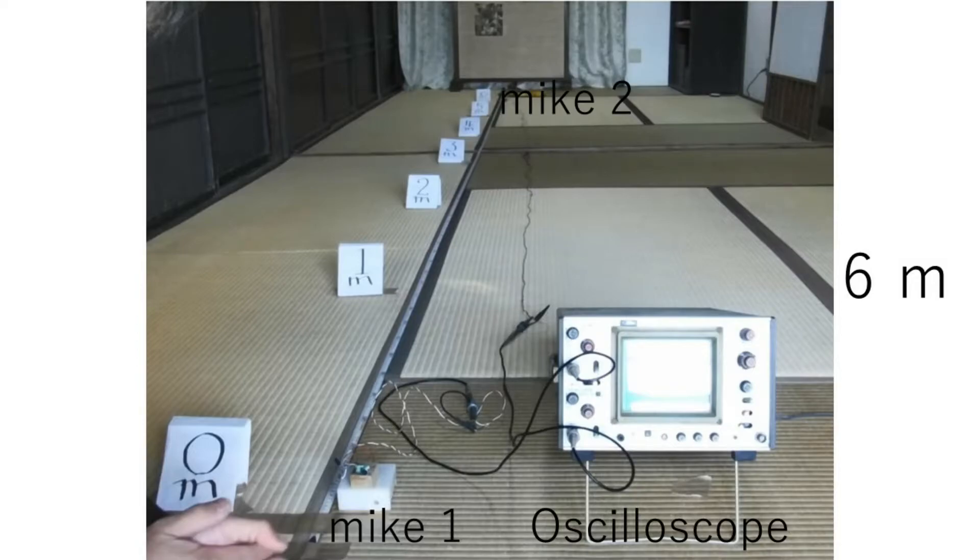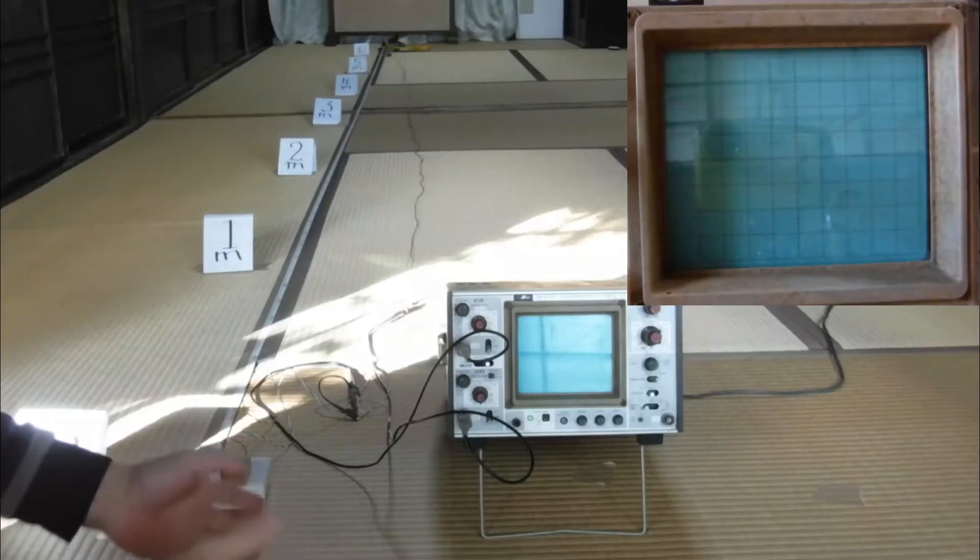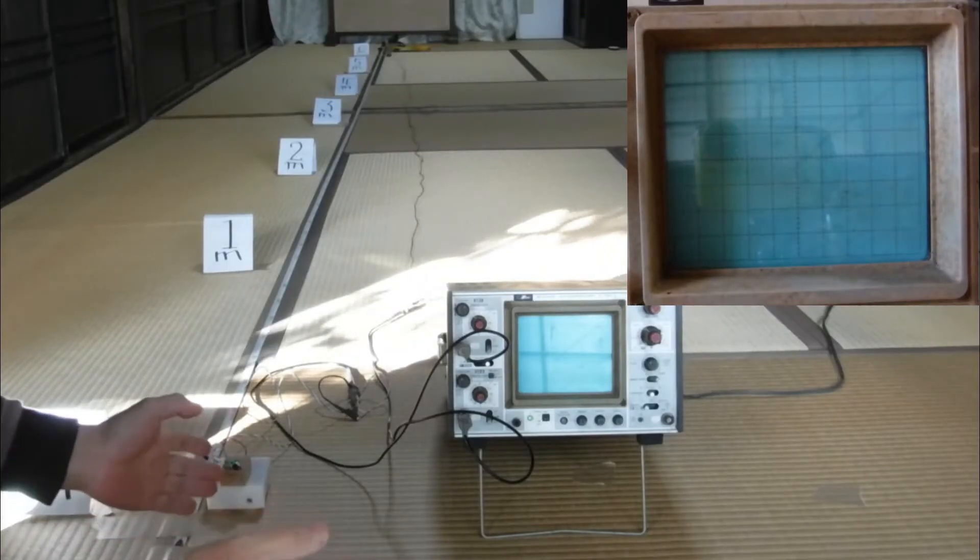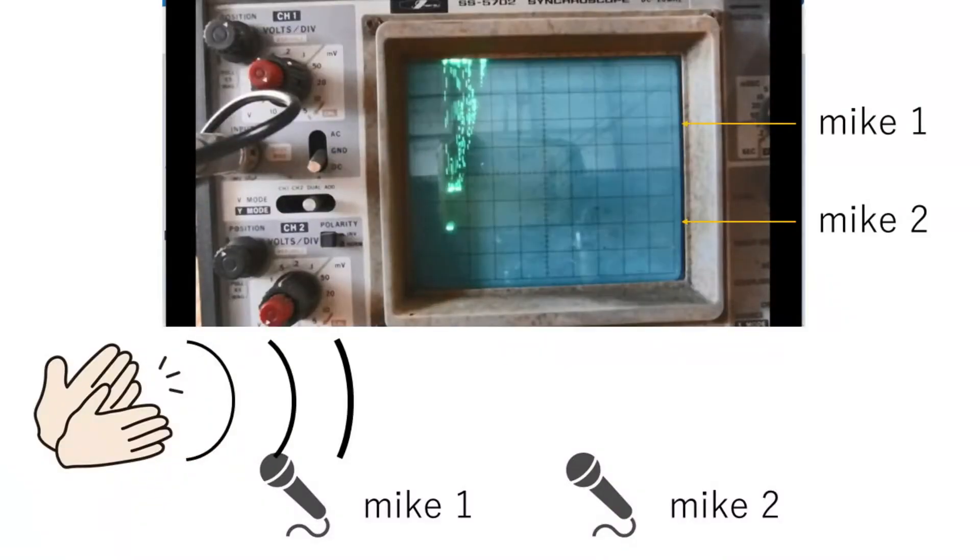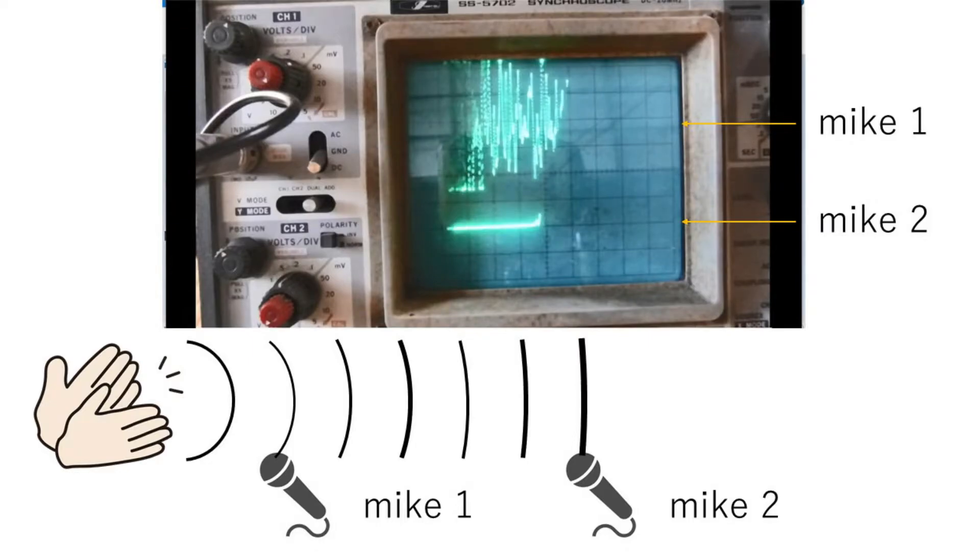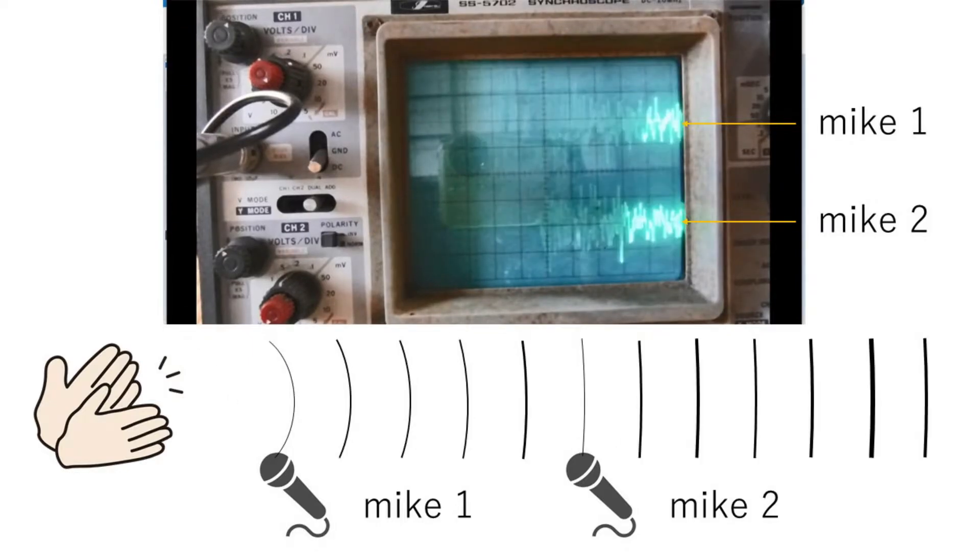Then, measure the time difference at the distance of six meters. The oscilloscope shows the time difference as the sound reaches the two microphones.